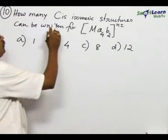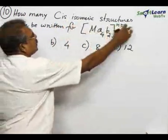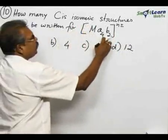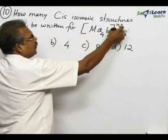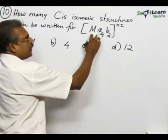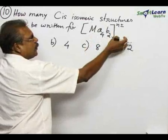Number 10, how many cis isomeric structures can be written for MA4B2 N plus or minus? Here M refers to central metal, A4 for a type of ligand, B is another type of ligand.